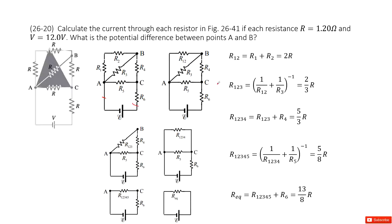We can get the resistance for this parallel connection as R1.2.3, which equals 2R over 3. Then R1.2.3 and R4 are a series connection, so we replace them with R1.2.3.4 by adding them together, giving 5R over 3.